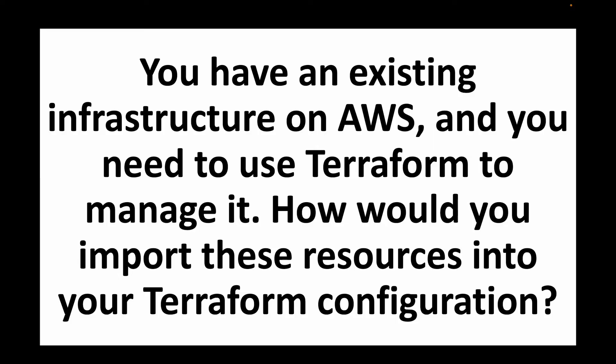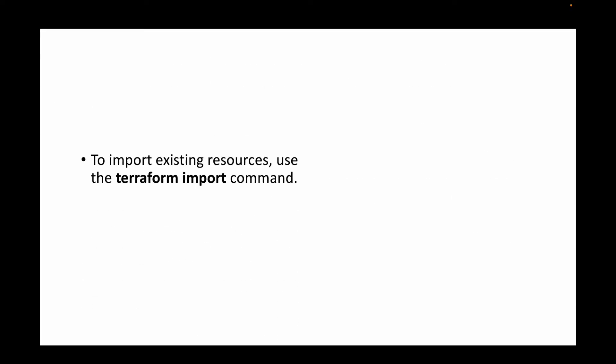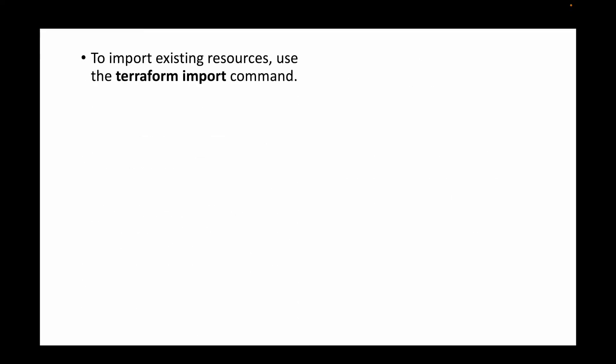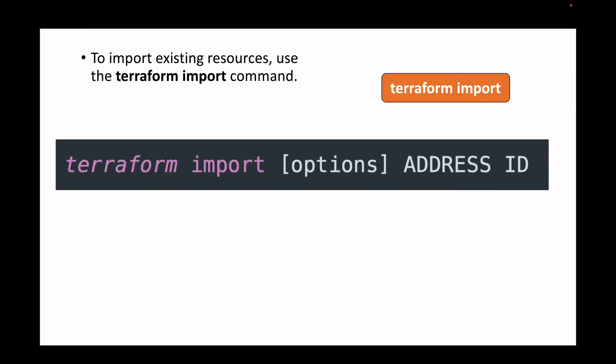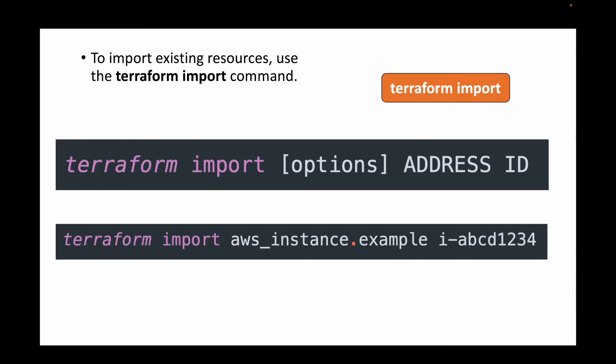The first scenario-based question is: you have an existing infrastructure on AWS and you want to use Terraform to manage it — how would you import these resources into your Terraform configuration? We already have infrastructure that was created manually and we want to start managing it with Terraform. For that, we can use the 'terraform import' command, which helps us import existing resources. You'll need to write a dummy configuration file first and then run the terraform import command.